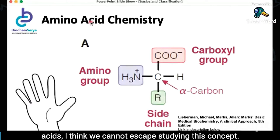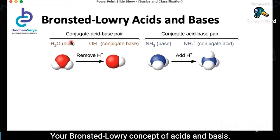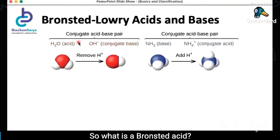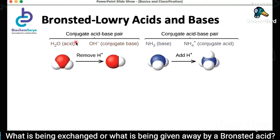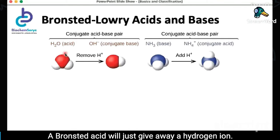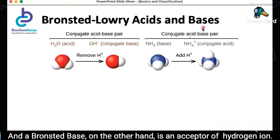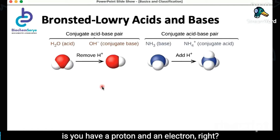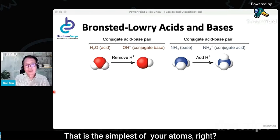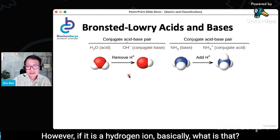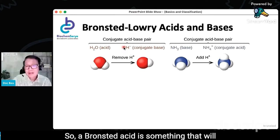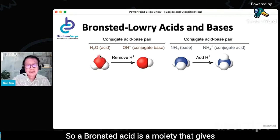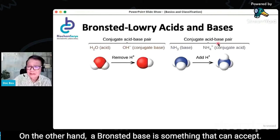Since we're dealing with acids, we cannot escape studying the Brønsted-Lowry concept of acids and bases. A Brønsted acid is basically a moiety that gives away — donates — a hydrogen ion, which is a proton. A Brønsted base, on the other hand, is an acceptor of hydrogen ion. A hydrogen atom has a proton and an electron. A hydrogen ion is just a proton. So a Brønsted acid donates a proton, and a Brønsted base is something that can accept a proton.